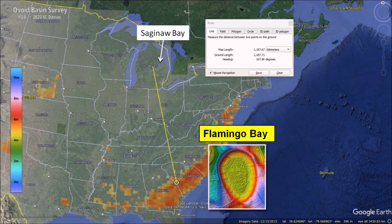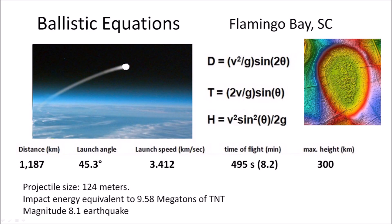Saginaw Bay has been proposed as an impact point from which glacier ice boulders were launched by the impact of a comet fragment. From the width-to-length ratio, the angle of impact was calculated at 45.3 degrees, corresponding also to the launch angle. Using ballistic equations, the glacier ice boulder that made Flamingo Bay was launched at a speed of 3.412 kilometers per second, had a flight time of 8.2 minutes, and reached a height of 300 kilometers — a suborbital space flight in the vacuum of space. The projectile had a diameter of approximately 124 meters, with an impact energy equivalent to 9.58 megatons of TNT producing seismic vibrations of magnitude 8.1 — clearly sufficient to create shock fractured quartz.